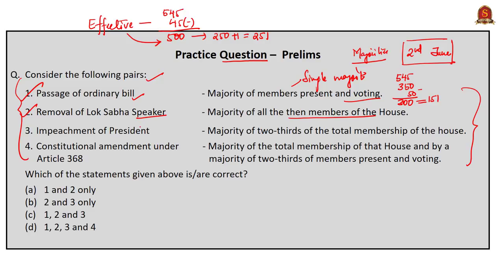Coming to the third one — the impeachment of the president. Be careful here. The majority required for the impeachment or removal of the president is the highest majority required according to the constitution. It is a majority of two-thirds of the total membership of the house. In case of Lok Sabha it is two-thirds of 545, which comes to around 364, and in case of Rajya Sabha it is two-thirds of 245, which comes to around 164. So the third one is also correctly matched.